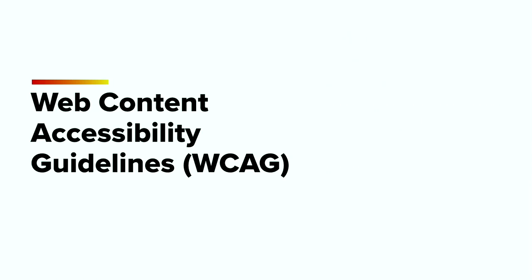The W3C has provided guidelines for us called Web Content Accessibility Guidelines, or WCAG for short. There are three levels of compliance: single A, double A, and triple A. WCAG 2.1 double A is the gold standard in the industry right now. Triple A is the holy grail.